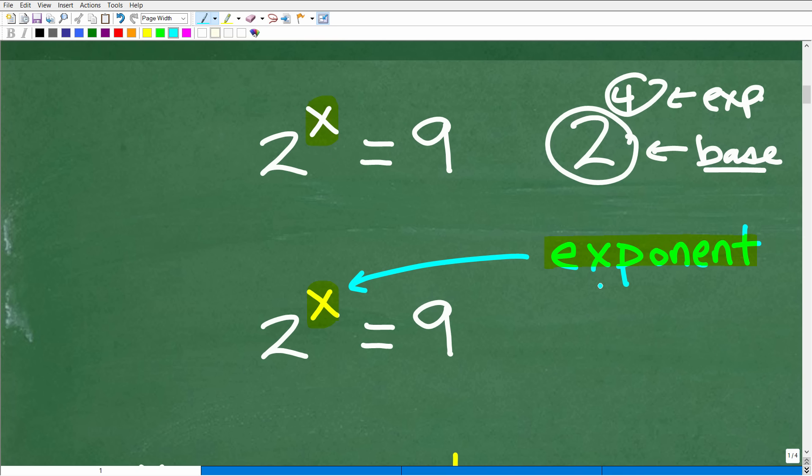But this is not this type of equation. What we have here, again, is the unknown value, the x, is in the exponent location. Hence, this is what we call an exponential equation. Okay? So how are we going to solve this? We'll explain this in just one second.